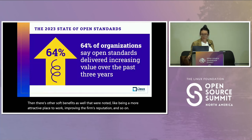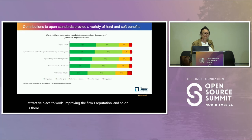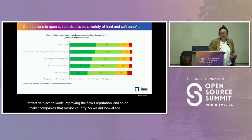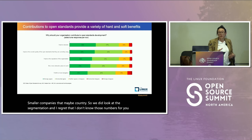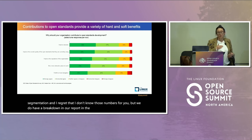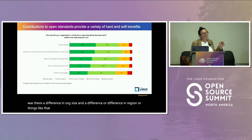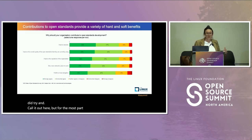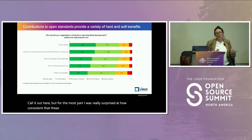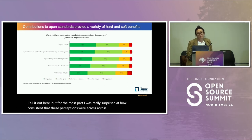Q: Is there a breakdown between large companies — more likely to have a patent portfolio indicated by the standard — versus smaller companies? We did look at the segmentation, and we have a breakdown in our report appendix by organization size and region where something notable was called out. For the most part, I was really surprised at how consistent these perceptions were across size and region.